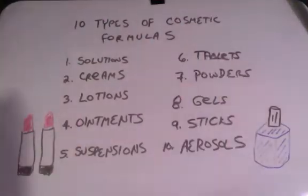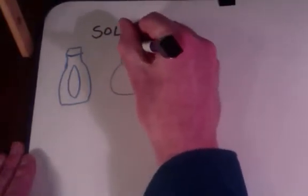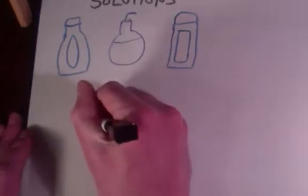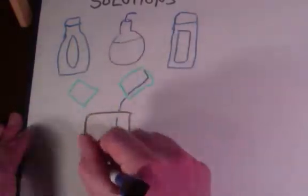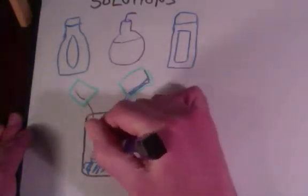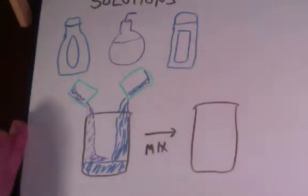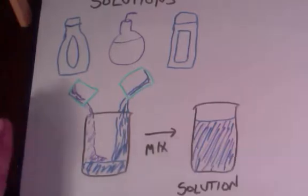Let's start with solutions. Solutions are the simplest type of cosmetic formulas, and they're used for a wide range of products, including shampoos, body washes, hand cleansers, colognes, etc. They are homogenous mixtures of soluble ingredients. To make them, you simply fill your container with the main diluent — it's usually water — then mix the rest of the ingredients into it. Sometimes warming the system slightly will increase the speed at which you can make them. They're a relatively easy formula to make, and typically they're very stable.